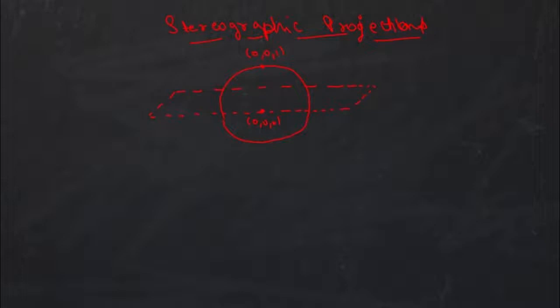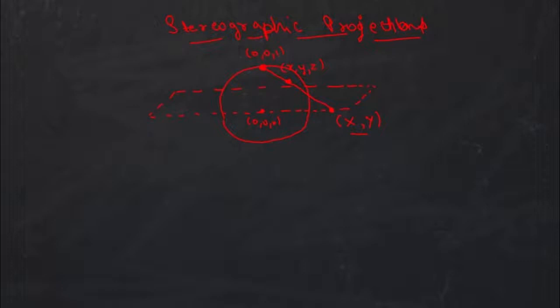So what is the stereographic projection? If I choose any point on the upper hemisphere of this unit sphere, say (x, y, z), and I connect that point to (0, 0, 1), and if I extend this line, then it will cut the complex plane in a unique point (x, y). This is the main concept of stereographic projection: choose any point on the upper hemisphere, join it to (0, 0, 1), extend the line, and it cuts the complex plane at a unique point.